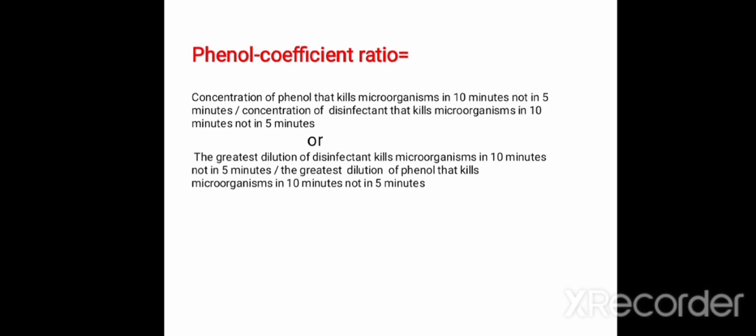Now we calculate the phenol coefficient ratio. The formula used is: the concentration of phenol that kills microorganisms in 10 minutes but not in 5 minutes, divided by the concentration of disinfectant that kills microorganisms in 10 minutes but not in 5 minutes. Alternatively, the greatest dilution of disinfectant that kills microorganisms in 10 minutes but not in 5 minutes, divided by the greatest dilution of phenol that kills microorganisms in 10 minutes but not in 5 minutes. The latter formula is more popularly used.